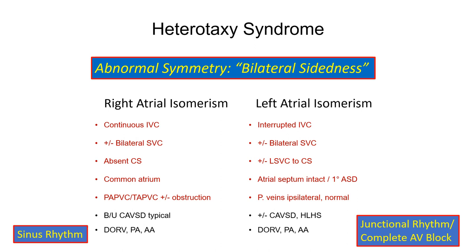Conversely, left atrial isomerism will have characteristics of a morphologic left atrium with pulmonary venous connections directly to the atria, and there will usually be an absence of right atrial features with atypical connections of the vena cavae to the atria. The coronary sinus is a left atrial feature and is usually not present in right atrial isomerism cases.